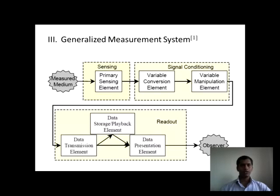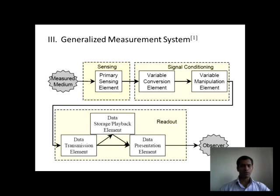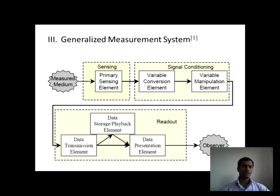The third point is the generalized measurement system. It consists of sensing, signal conditioning, and readout. Our measurement media, whatever it may be, can be measured with the help of a primary sensing element or sensor. Then, with the help of a variable conversion element and variable manipulation element, we are modifying this signal. Readout consists of a data transmission element and a data presentation element. If needed, we can store this data; otherwise, we can eliminate the data storage block.